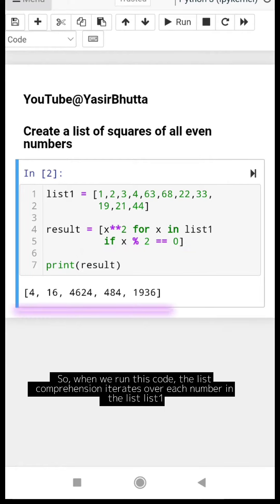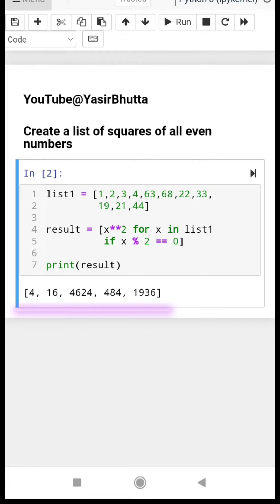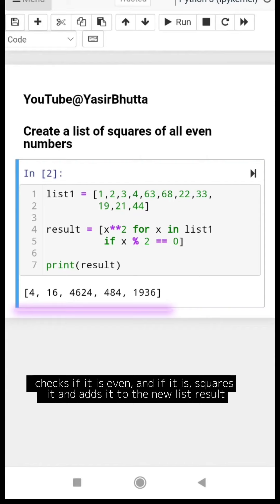So, when we run this code, the list comprehension iterates over each number in the list list1, checks if it is even, and if it is, squares it and adds it to the new list result.